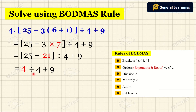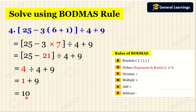We have two operations: division and addition. First we do division: 4 divided by 4 equals 1. We write plus 9 as it is. Then 1 plus 9 equals 10. When we solve this question we get the answer as 10.